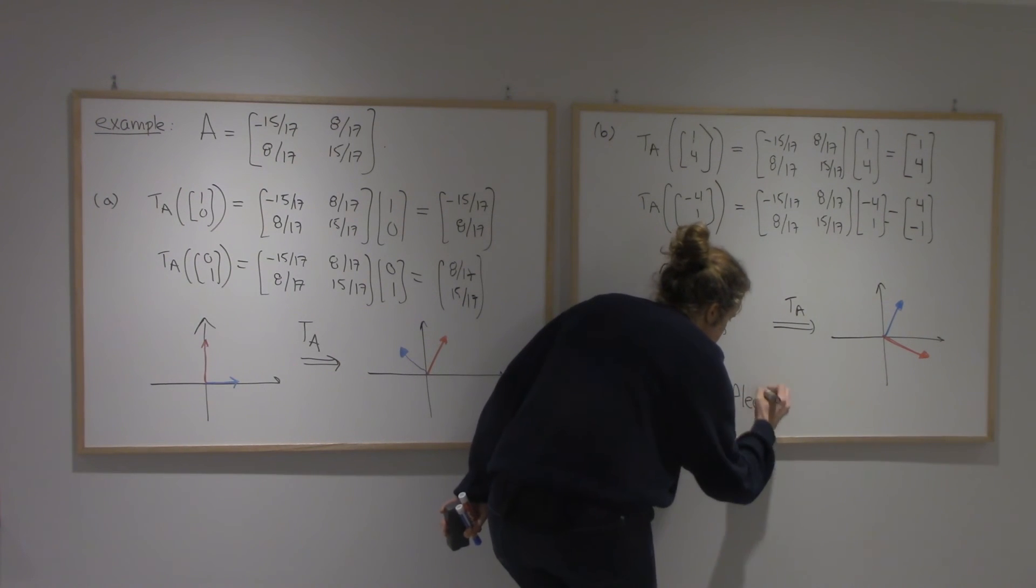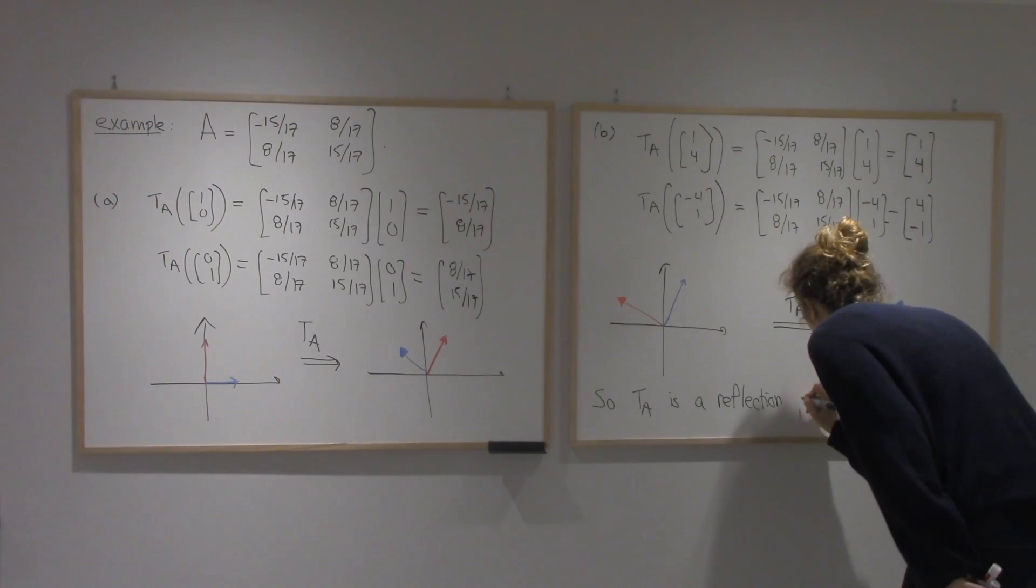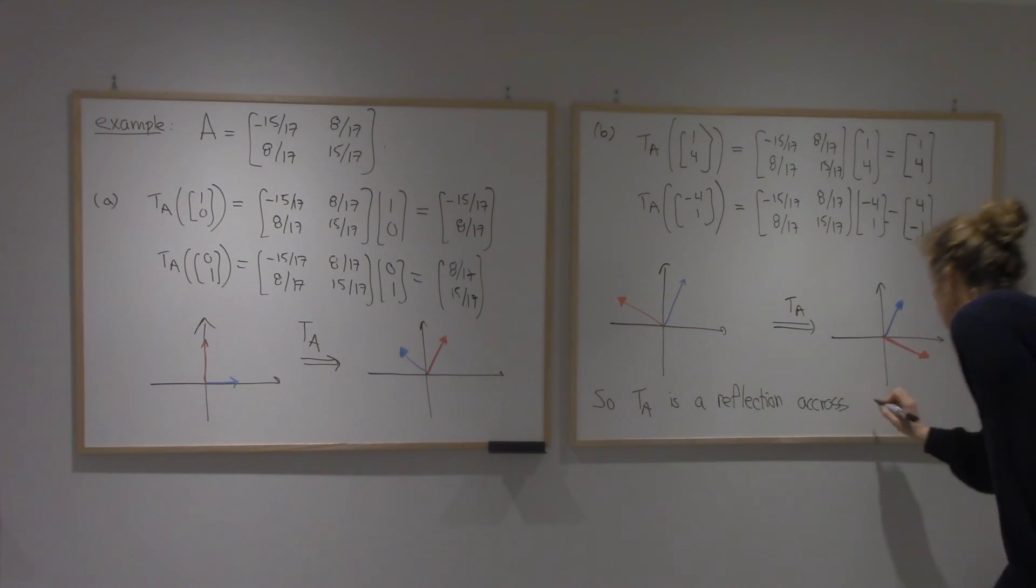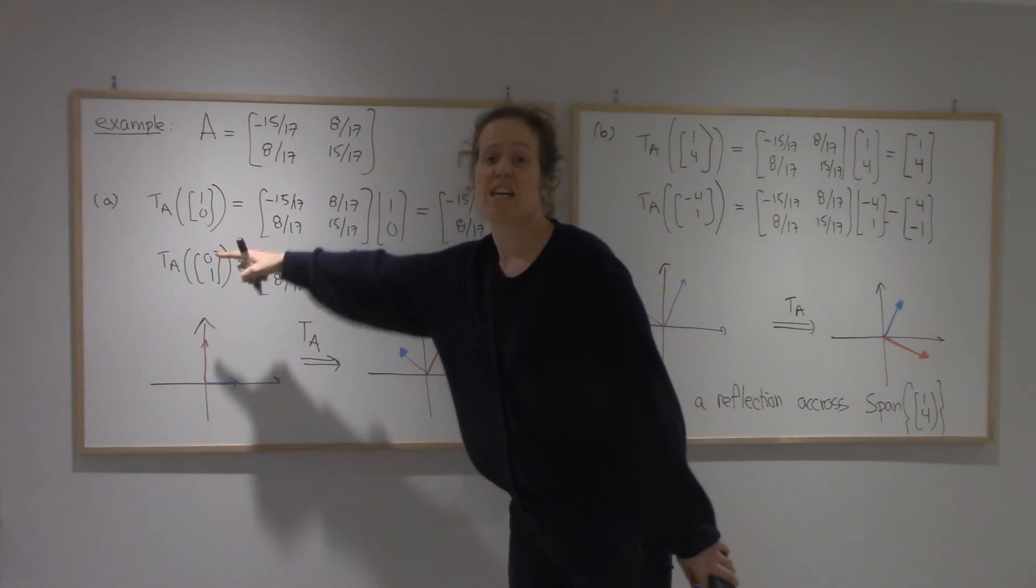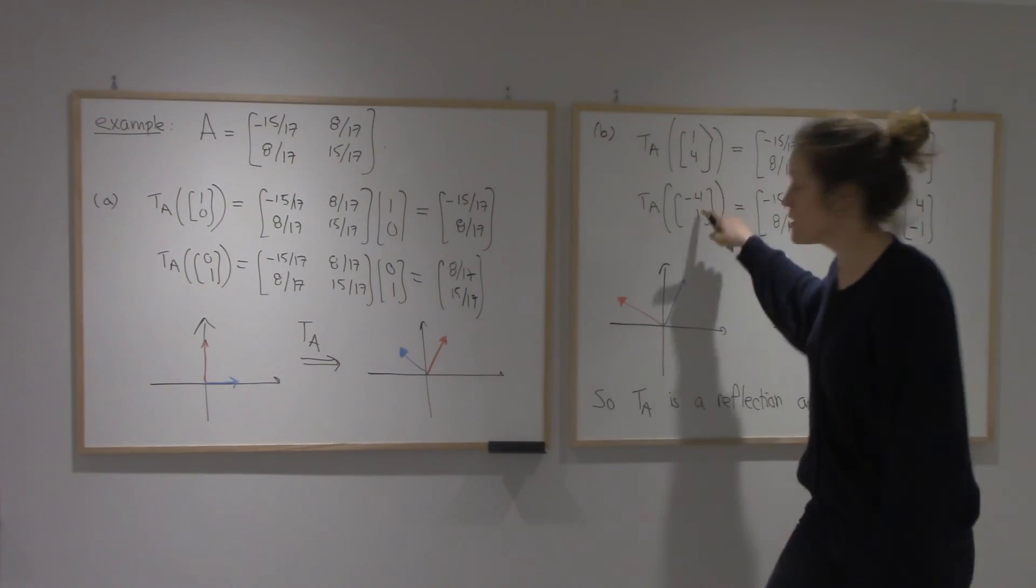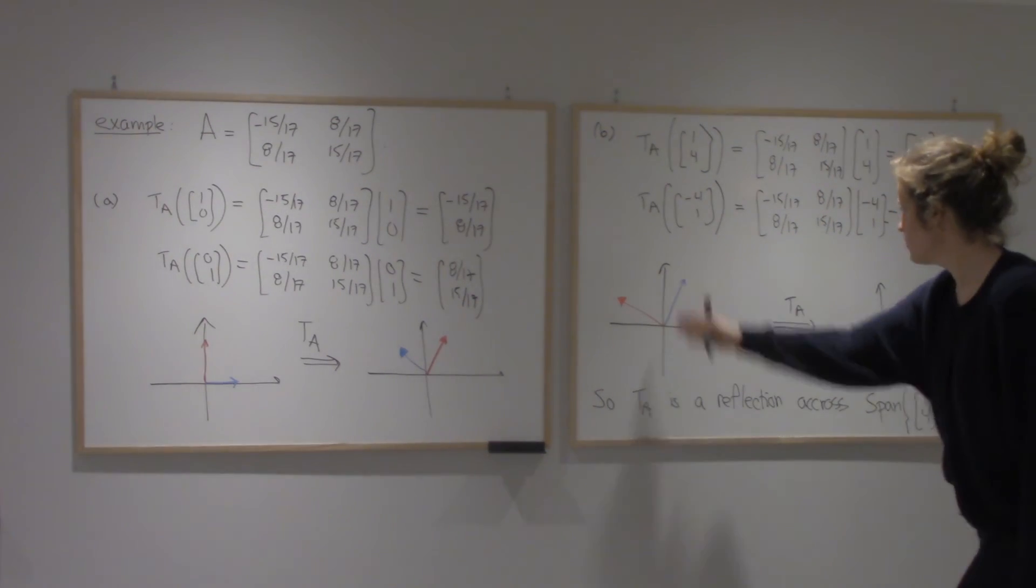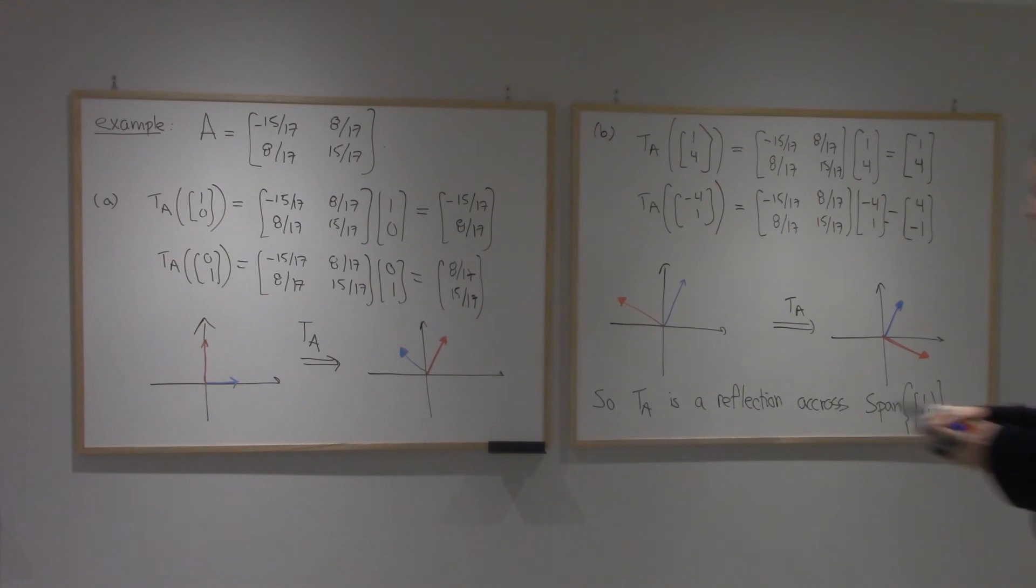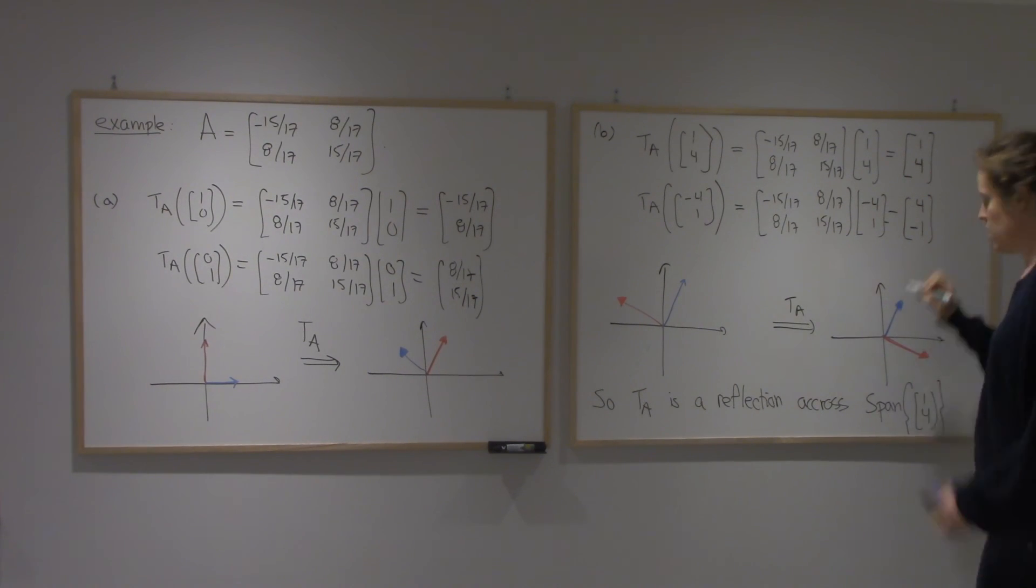So T_A is a reflection. And we even know the line. It's the blue vector that gives us the line across. So span of (1, 4). Alright, so figuring out what T_A does on the general basis gives us not much, but this special basis that was built especially for this matrix gives us the whole story. We can see it's a reflection on this line here.